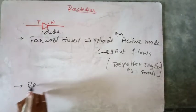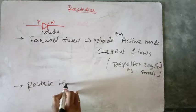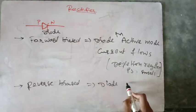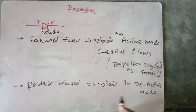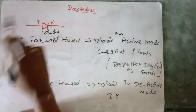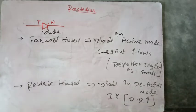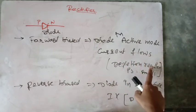And if the diode is reverse biased, the diode is said to be in deactive mode, and no current flows through that diode. The reason is the depletion region is greater. Here the resistivity for the current flow because of this depletion region increases, whereas in forward bias the resistivity for the current flow because of the depletion region decreases.